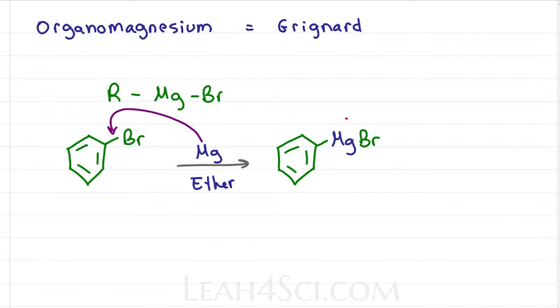We have a partially positive magnesium bound to a partially negative halogen, and a very partially negative and very reactive carbon. This carbon here will act like the carbanion in the Grignard reagent.